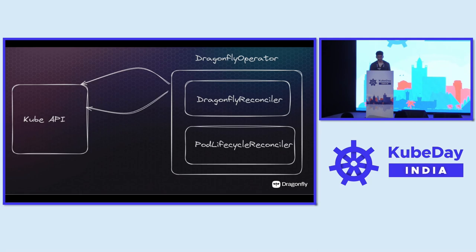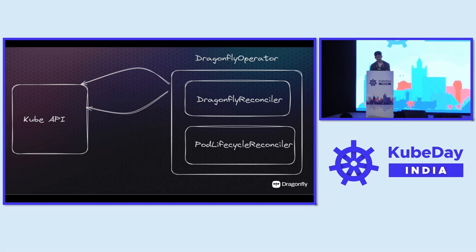Internally, the magic consists of two things for the Dragonfly operator. Operators can be built in many ways — this is one approach. In our case, we have two reconcilers: one is the Dragonfly reconciler, and the other is the pod lifecycle reconciler. We'll talk about what each does, and also look at the code.